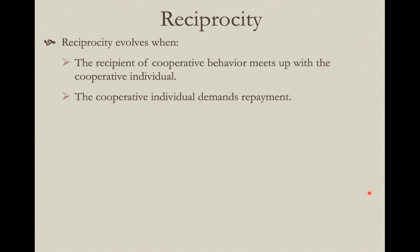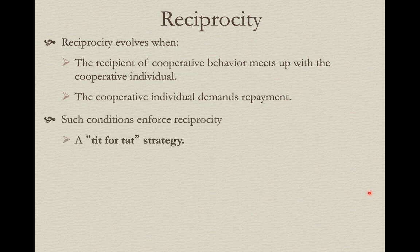So reciprocity and its evolution has some issues. Reciprocity can evolve when the recipient of cooperative behavior is likely to meet the cooperative individual again in the future, and that cooperative individual can say: 'I did that favor for you; I need a favor now.' This sets up a condition that can enforce reciprocity and make it work — which is called tit for tat.